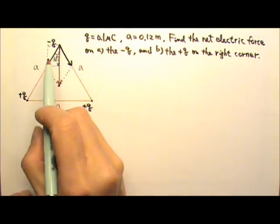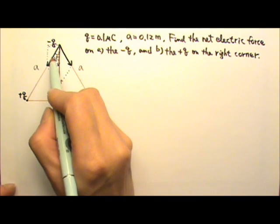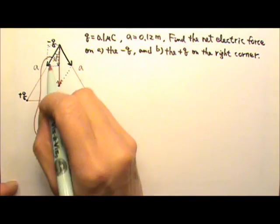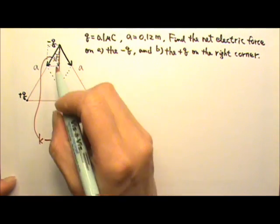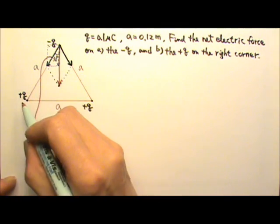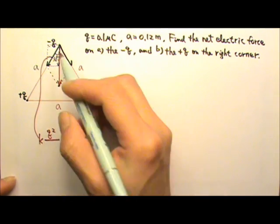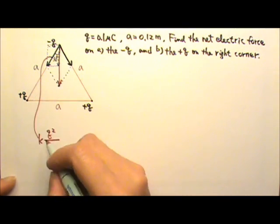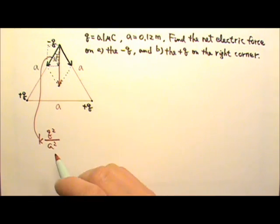To find the net force, we first find the electric force between these two point charges: F = kQ₁Q₂/r², which is kQ²/A² since both charges are Q and the side length is A. I'm not going to plug in the numbers until the end, just for convenience.